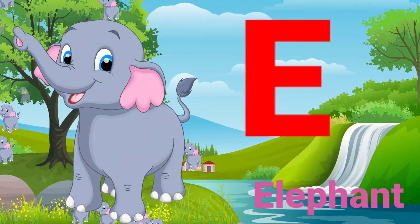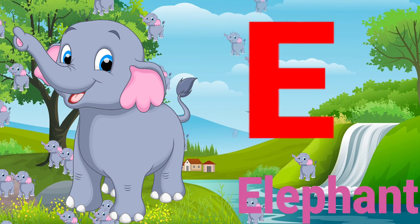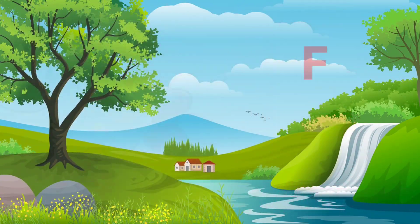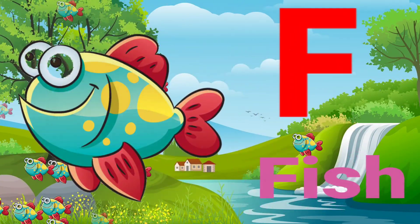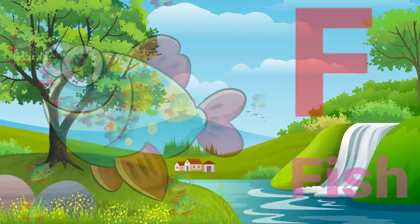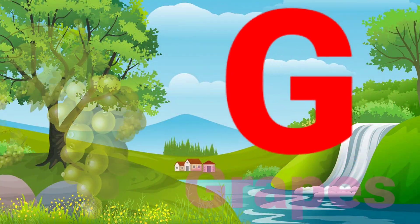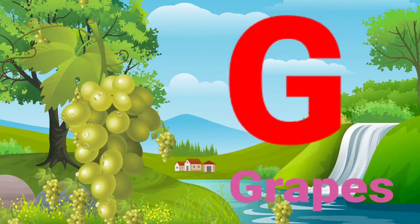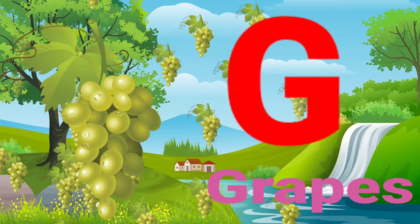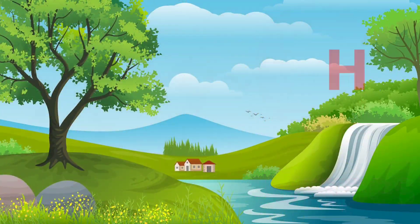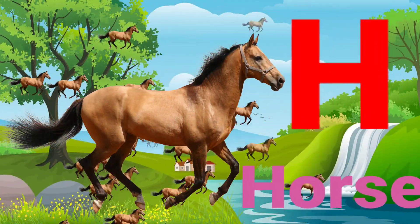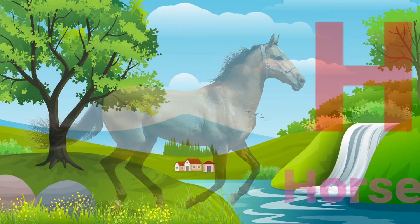E. E for elephant. F. F for fish. G. G for grapes. H. H for horse.